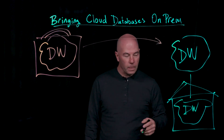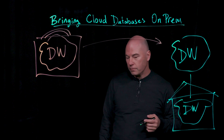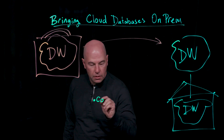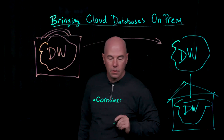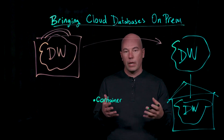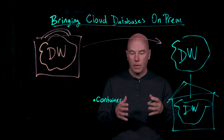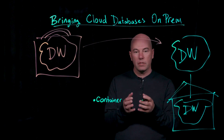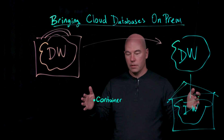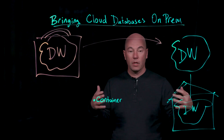So how do we do this? There are four main factors that enable us to bring cloud databases on-prem. The first is containers. We take Greenplum, which is a massively parallel Postgres — open-source Postgres, open-source Greenplum. Each Postgres instance can process terabytes of data, and we can run these Postgres instances in parallel, which enables you to process petabytes of data.